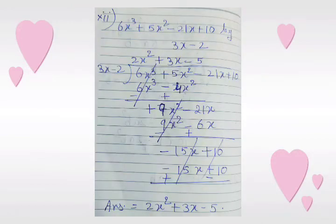Next: 6x cubed plus 5x squared minus 21x plus 10 divided by 3x minus 2. First we multiply 3x minus 2 with 2x squared and get 6x cubed minus 4x squared. After changing the sign of the last line, the first term is cancelled, and after solving the second term we get plus 9x squared minus 21x.